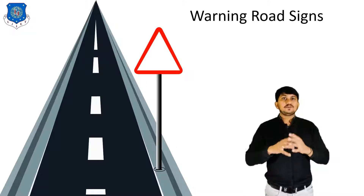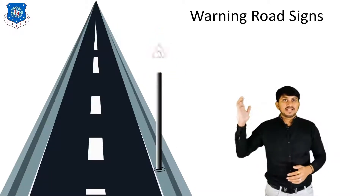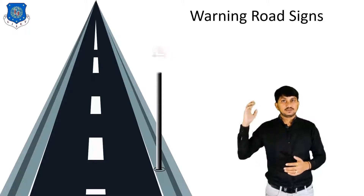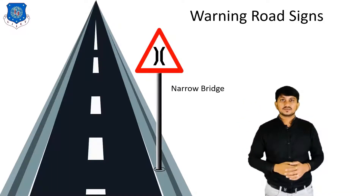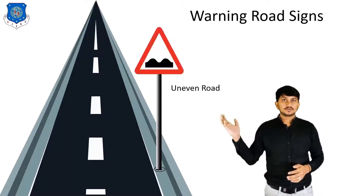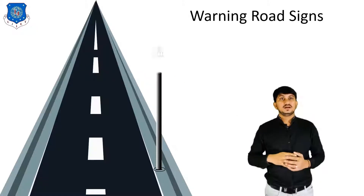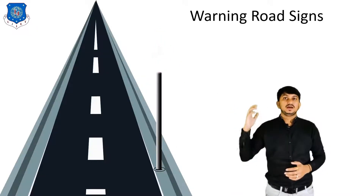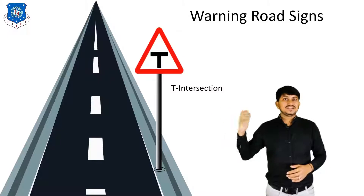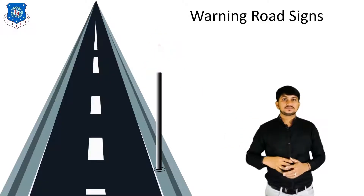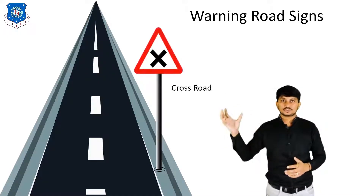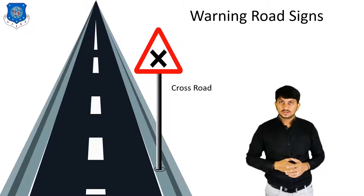Different types of warning signs are like Left Hand Curve, Right Hand Curve, Narrow Bridge, Man at Work, Uneven Road, Narrow Road, Roundabout Wind Circle, T Intersection, Side Road Right, and Cross Road.